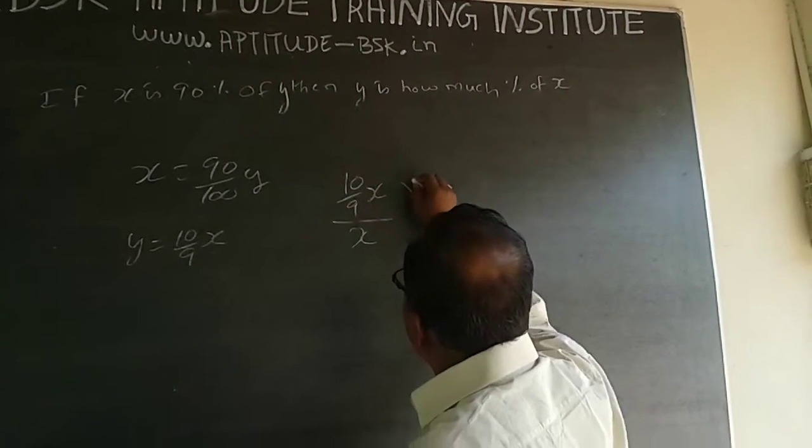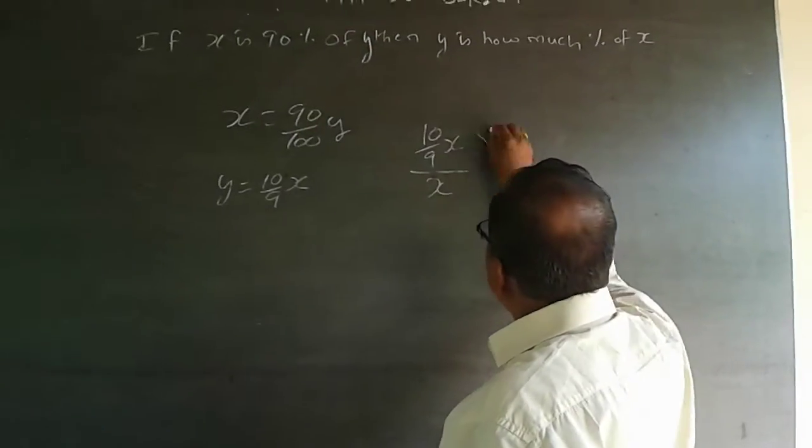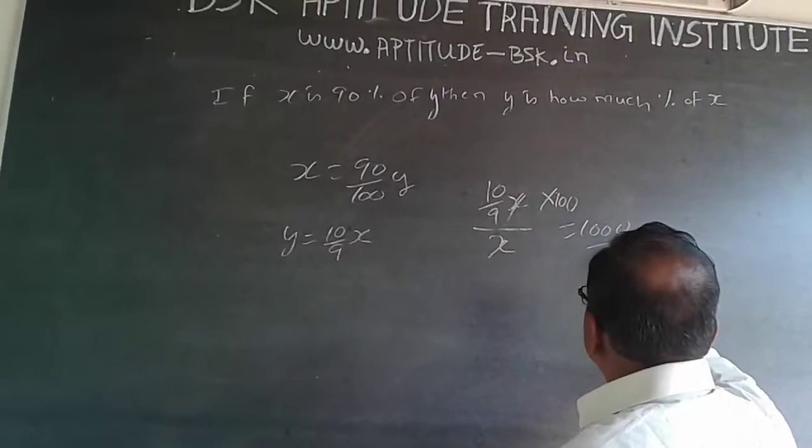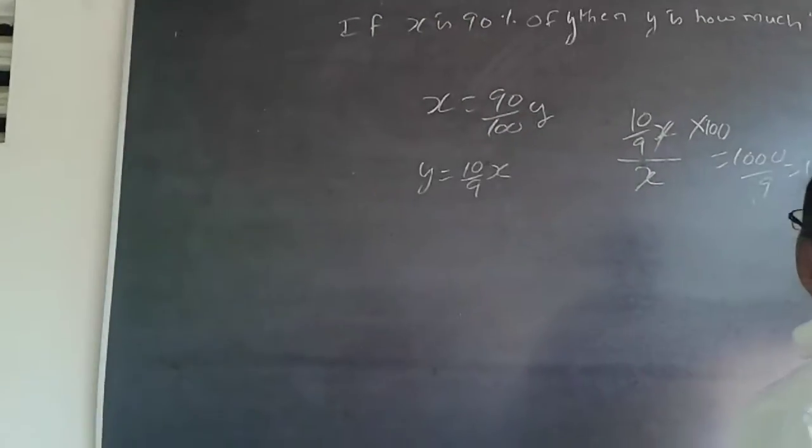Percentage means per 100 of x. If it is 10/9 of x for x, then for 100 of x, this x will get cancelled. This equals 1000/9, which equals 111.11 constant.